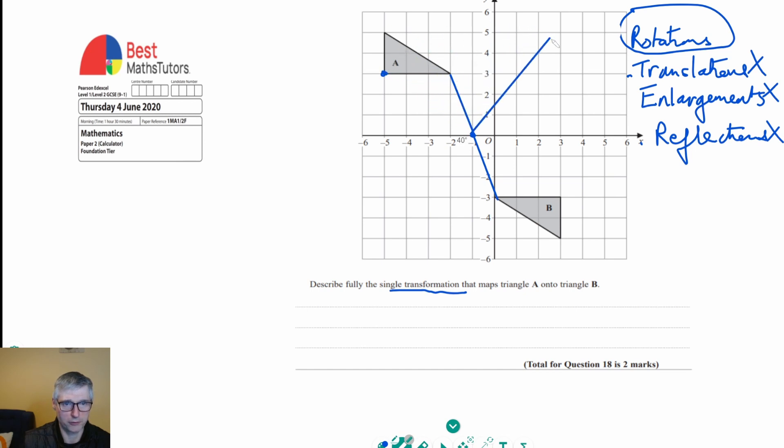And if we spun it around, I'm just trying to keep the line the same length there, it would end up there. So again, around that same pivot point, it's actually spun 180 degrees and given us the new point on shape B.